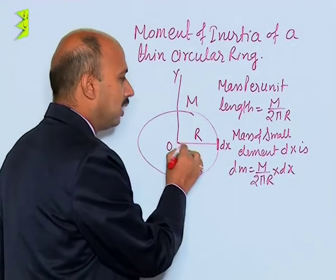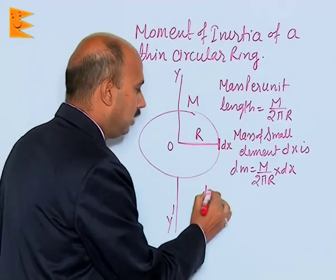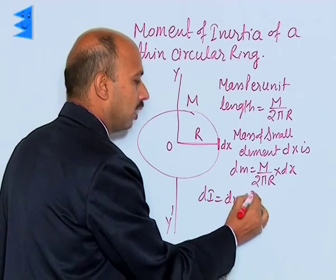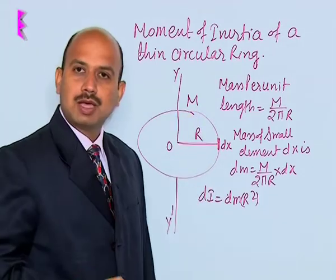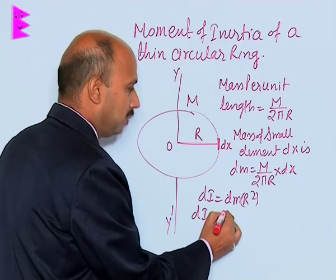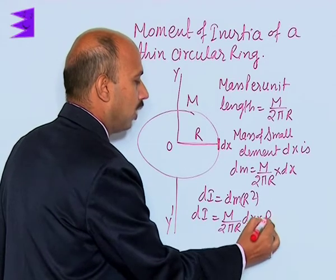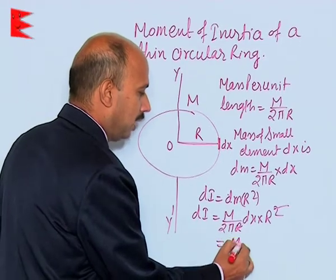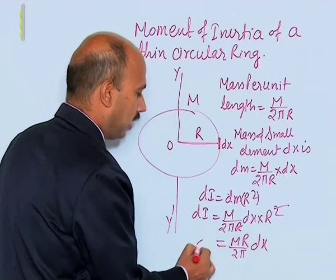Now we calculate the moment of inertia of this small element. We can write dI = dm · r², where dm is the mass and r is the perpendicular distance from the axis of rotation. Putting in the value of dm: dI = (m / 2πr) · dx · r². This r cancels, giving dI = (mr / 2π) · dx.